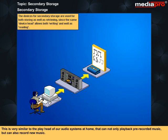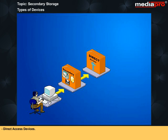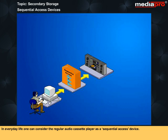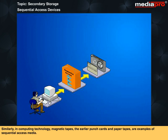One can see a clear distinction among secondary storage devices depending on the kind of data access they permit: sequential access devices and direct access devices. Sequential access devices allow data to be accessed only in a particular sequence. In everyday life, one can consider the regular audio cassette player as a sequential access device. One can play and listen to the fourth song only by playing or fast-forwarding the preceding three songs. Similarly, in computing technology, magnetic tapes, the earlier punch cards and paper tapes are examples of sequential access media.